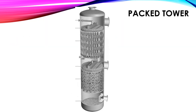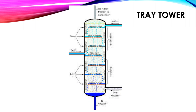This is a typical packed tower. The bottom section has packing in a random method and the top uses structured packing. On the top of each bed, distributors are shown. This is a tray tower with a single pass arrangement.